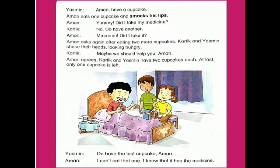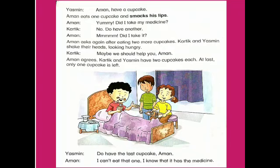Yasmin: Have a cupcake, Aman. Aman eats one cupcake and smacks his lips. Aman: Yummy. Did I take my medicine? Karthik: No. Have another. Aman eats two more cupcakes, then asks again. Karthik and Yasmin shake their heads, looking hungry. Karthik: Maybe we should help you, Aman. Aman agrees. Karthik and Yasmin have two cupcakes each. At last only one cupcake is left. Yasmin: Have the last cupcake, Aman. Aman: I can't eat that one — I know it has the medicine.